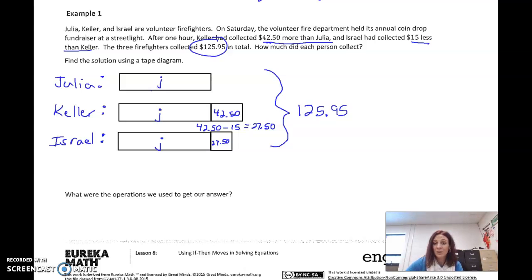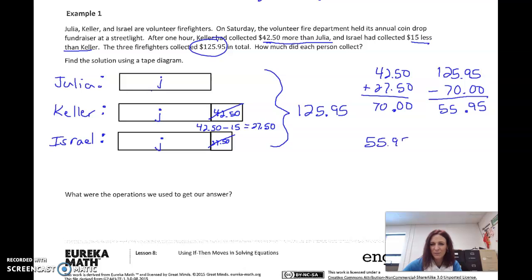Julia here, we'll call this J, that's how much money she has. Keller has whatever Julia has plus an additional $42.50, and Israel has whatever Julia has plus an additional $27.50. We know that all together, all three of these has to equal $125.95. To figure this out, we take our total here and we're going to subtract off this and this. So $42.50 and $27.50 if I add that together, that works out to be $70. So I'm going to take $70 off of this whole thing, $125.95 minus $70, and that works out to be $55.95.